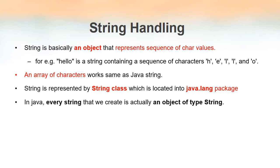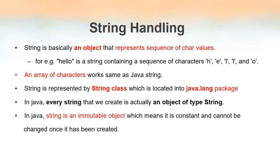The key difference between String and other data types in Java is that String is not a data type — it is a class. So when you write 'String s', you are actually creating an object of class String, not a primitive type like int. In Java, String is also an immutable object, meaning once a String has been created, we cannot change it. It behaves as a constant value.